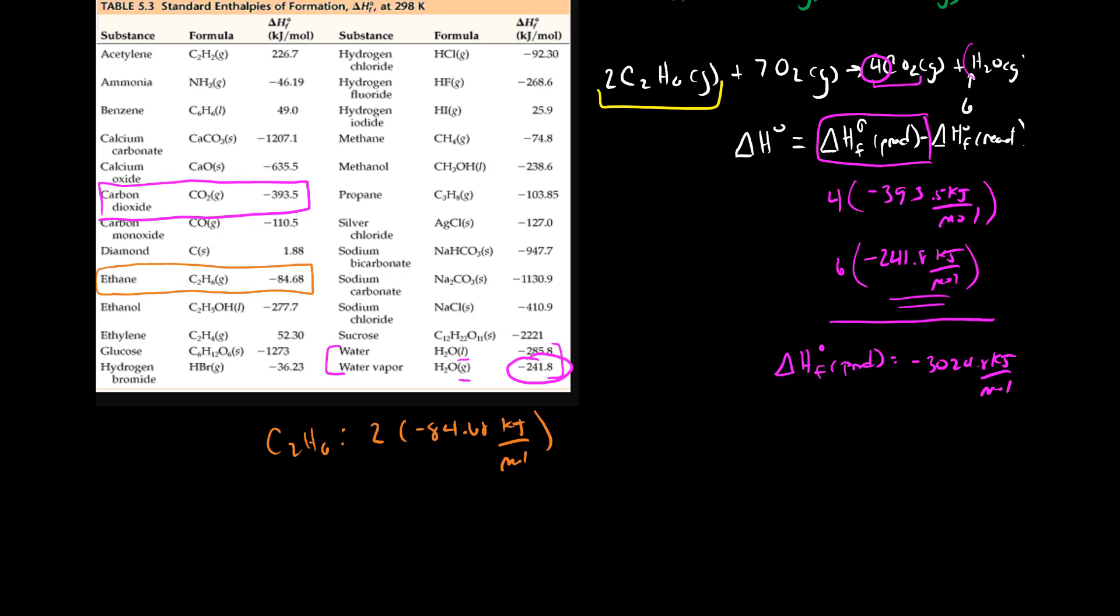The value for oxygen, look as hard as you want and you're not going to find it in this table. And that's because oxygen is already present in its most stable form. So the enthalpy of formation for oxygen is zero.